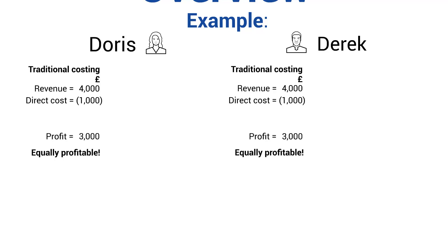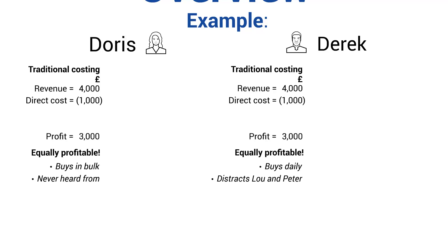But what if the customers treat Lou very differently? What if the way in which they shop is very different? For example, Doris buys in bulk — she purchased £4,000 worth at the very start of the year. Whereas Derek comes into the shop every single day and buys one ball of yarn. He goes through the processing and receipts at the till every single day, and he always distracts Lou and Peter because he likes to have a conversation and asks about the different types of wool every time.